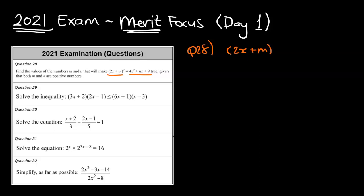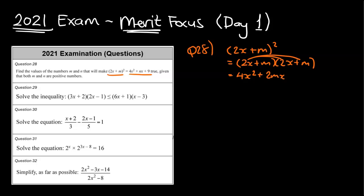We've got (2x + m)². I'm going to write that as a double bracket: (2x + m)(2x + m). Expanding: 2x times 2x gives 4x squared. Then 2x times m gives 2mx, and we get another 2mx. Finally we have m squared. Grouping the middle terms gives 4mx.